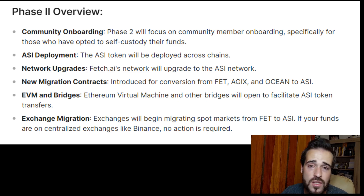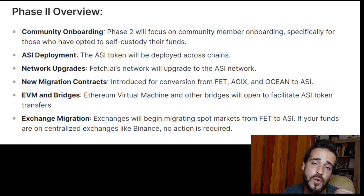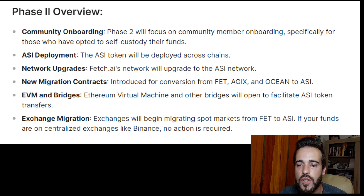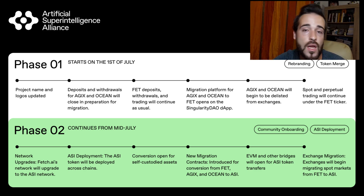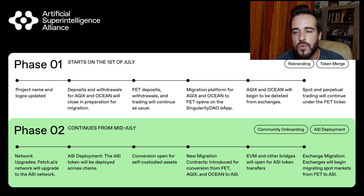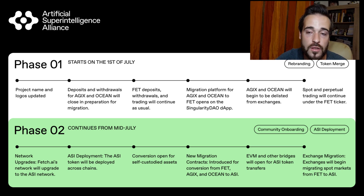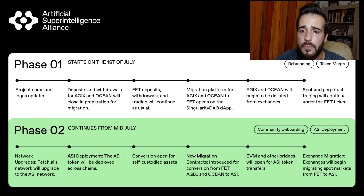If you have tokens that aren't converted yet — perhaps because they're on another chain — you can always bridge them and take care of conversion afterwards. There are still no concrete deadlines for the end of Phase 1 or the start of Phase 2. The migration smart contracts should remain open for years, so there's no immediate rush — but if you want to sell tokens soon, you'll need to act earlier. It's best to take care of it as soon as possible for peace of mind.